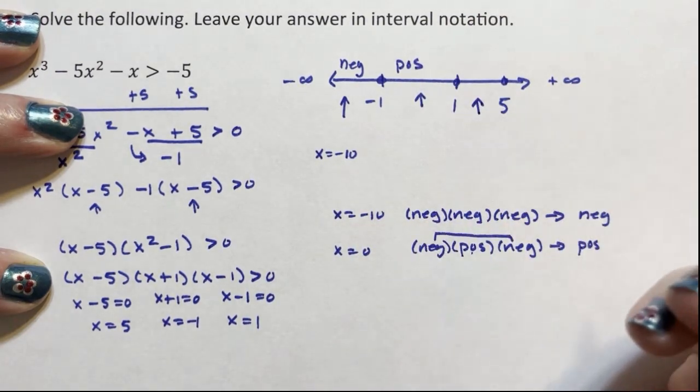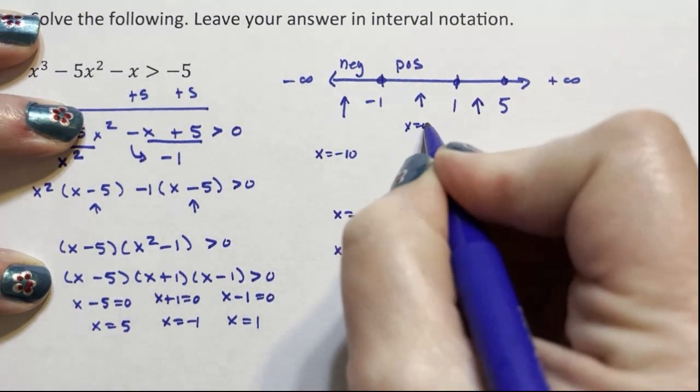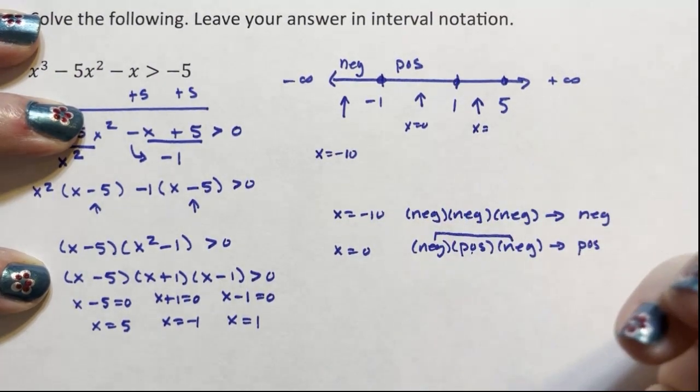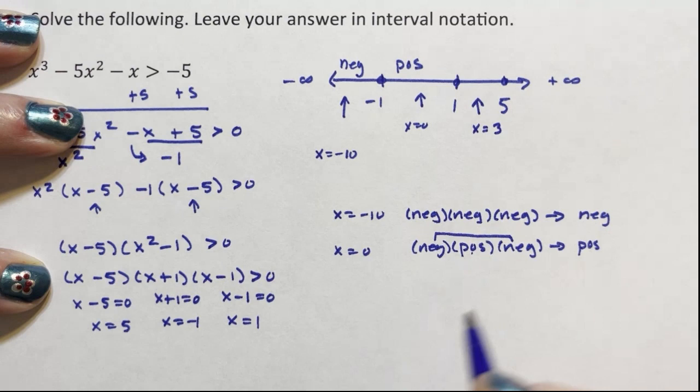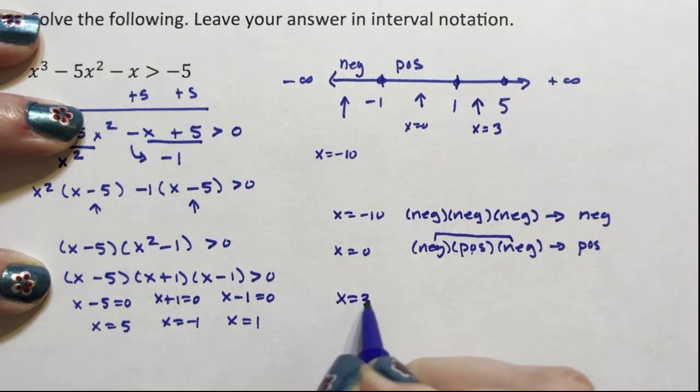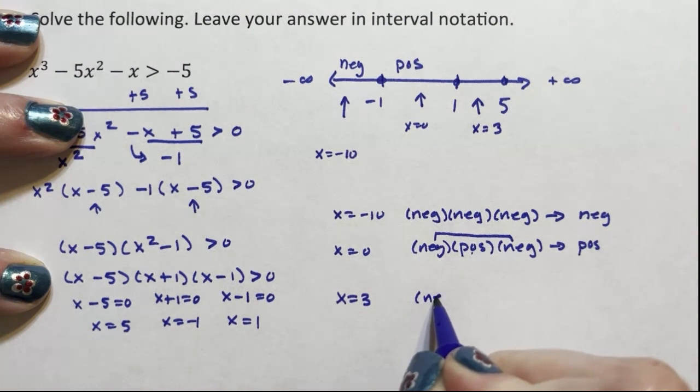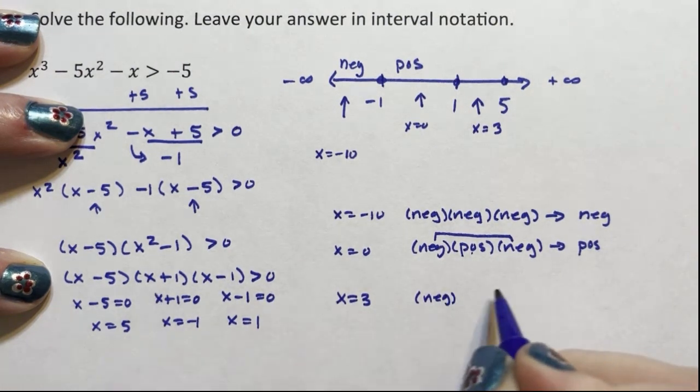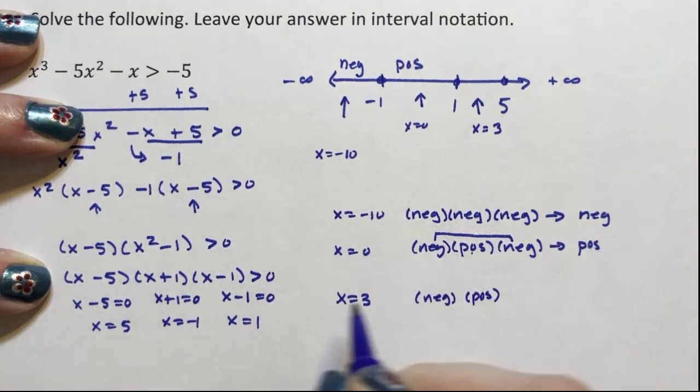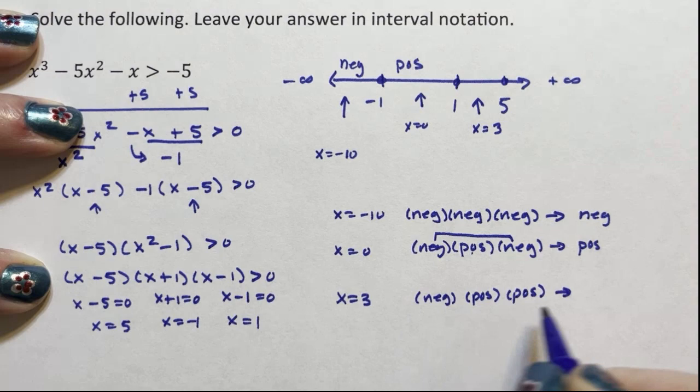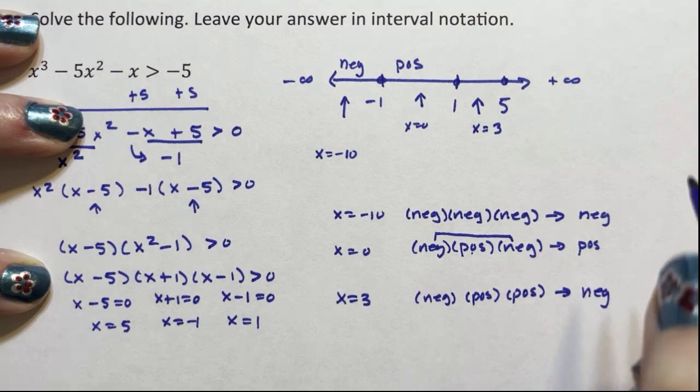I'm going to choose something in here. Let's take x equals maybe 2, 4, 3. It doesn't really matter. Let's take 3. We take x equals 3. 3 minus 5 is negative. 3 plus 1 is positive. 3 minus 1 is positive. These two are going to stay positive, but that one negative is going to force this whole thing to be negative.